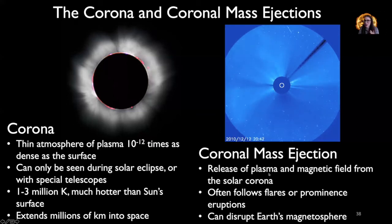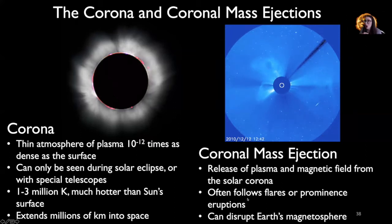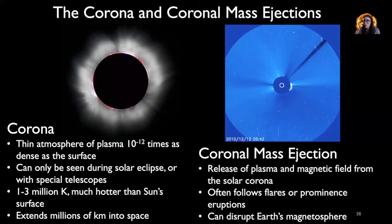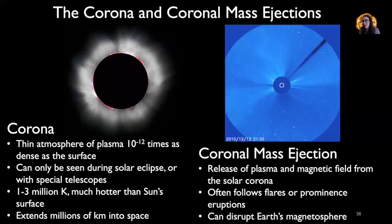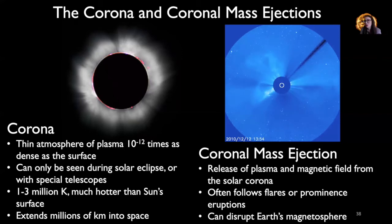Coronal mass ejections are releases of plasma and magnetic field from the solar corona. They often follow flares or prominence eruptions. These coronal mass ejections travel through the solar system and often strike our planet, disrupting our magnetosphere — the magnetic field surrounding Earth and protecting it from events like these coming from the sun.